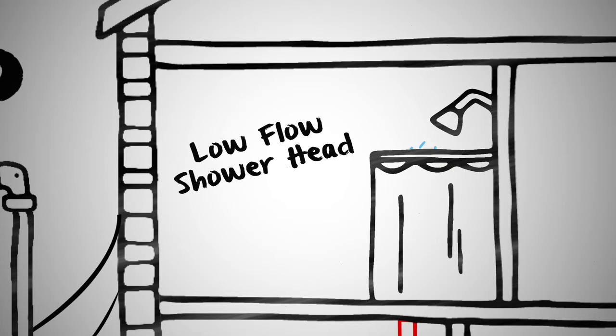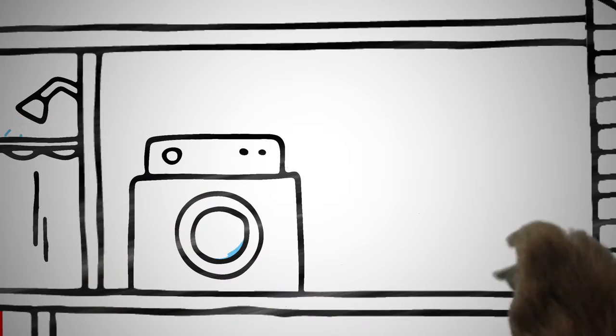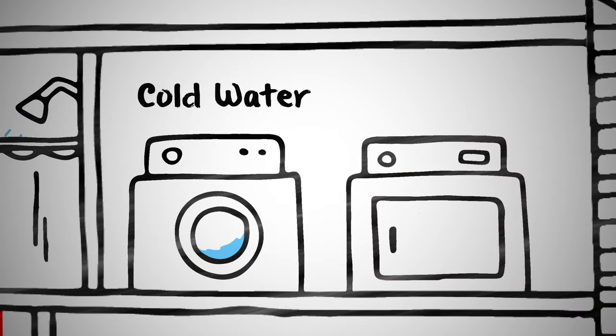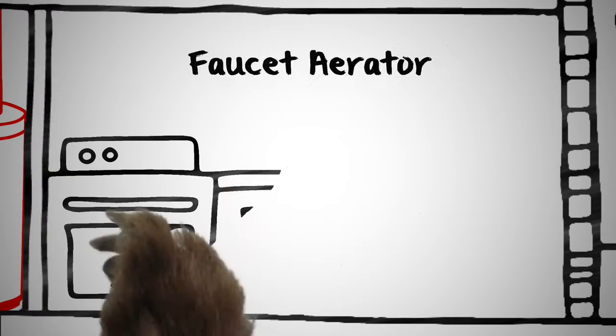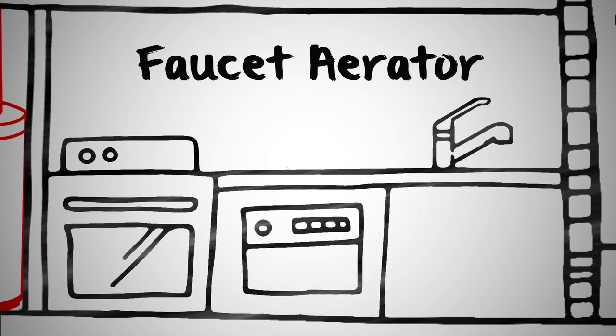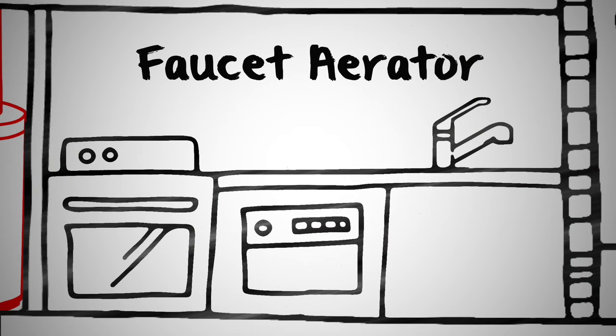Modern low-flow shower heads work great and save hot water and energy in the bathroom. Washing clothes in cold can save you some energy while you do laundry. And using faucet aerators and fully loading the dishwasher means less hot water and energy in the kitchen.